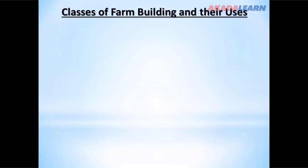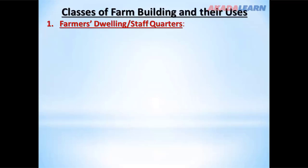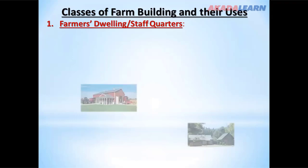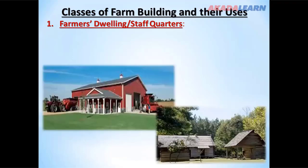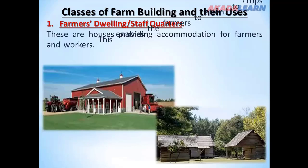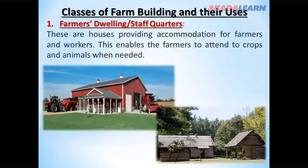Classes of farm buildings and their uses. Number one, we have the farmer's dwelling or staff quarters. These are houses providing accommodation for farmers and workers, enabling the farmers to attend to crops and animals when needed.